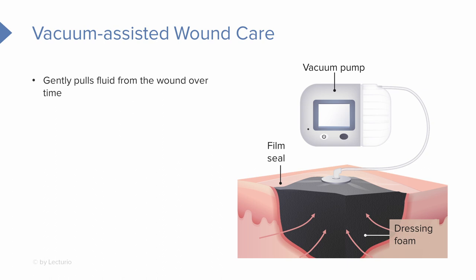We put the dressing foam in the wound, then seal it with a thin clear adhesive dressing called the film seal, and all of that attaches to the vacuum pump itself. The pump has various settings that the wound care doctor or physician may order for your patient. The vacuum pump provides suction to pull all extra fluid through the pump and into a collection canister. Let's talk about the advantages of this wound vac — it gently pulls fluid from the wound over time.